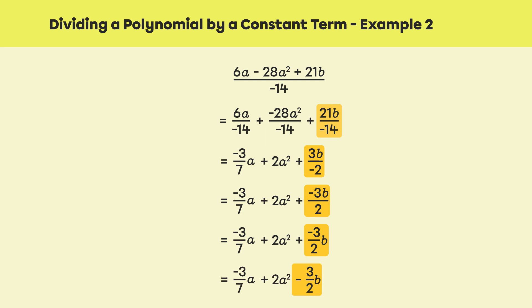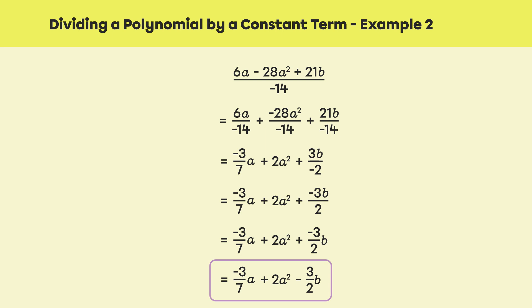We can also remove the plus sign in front of negative 3/2 and keep only the negative sign. Therefore, the simplest form of the division is negative 3/7 · a plus 2a² minus 3/2 · b. I hope this video helped you understand how to divide an algebraic expression by a constant term. Thank you!